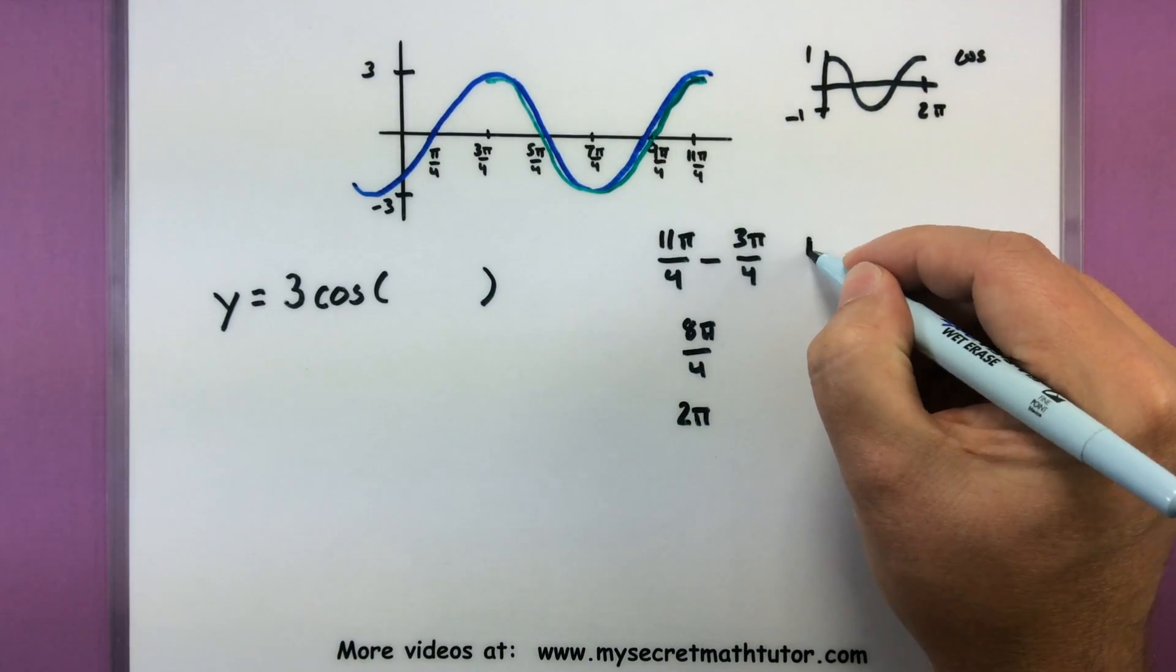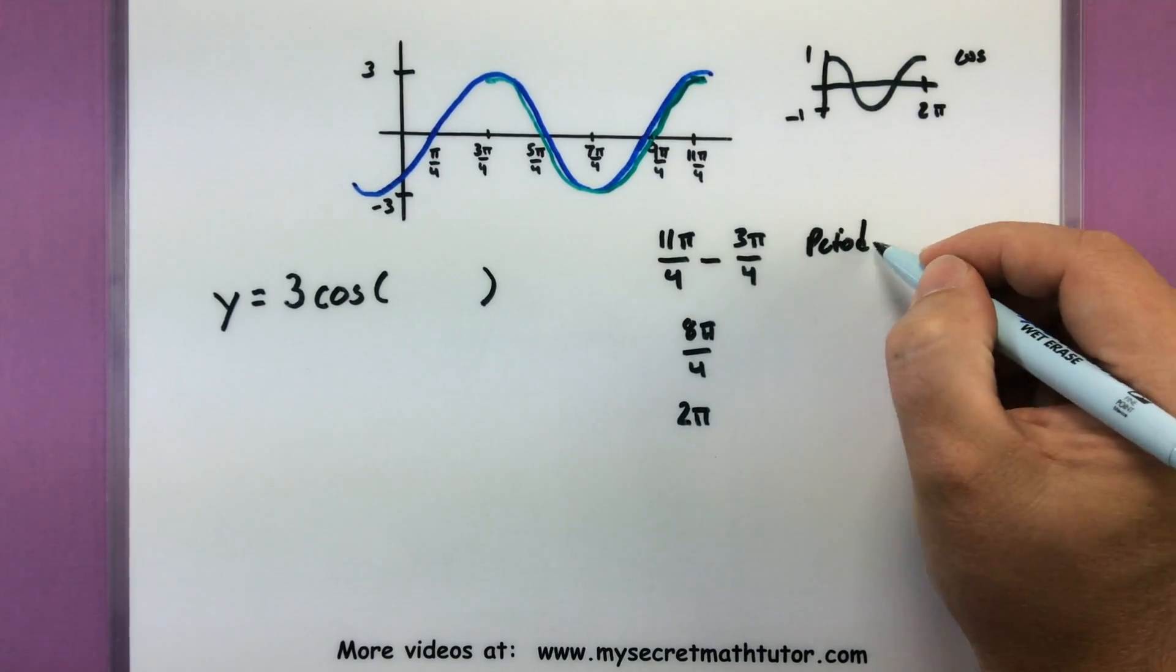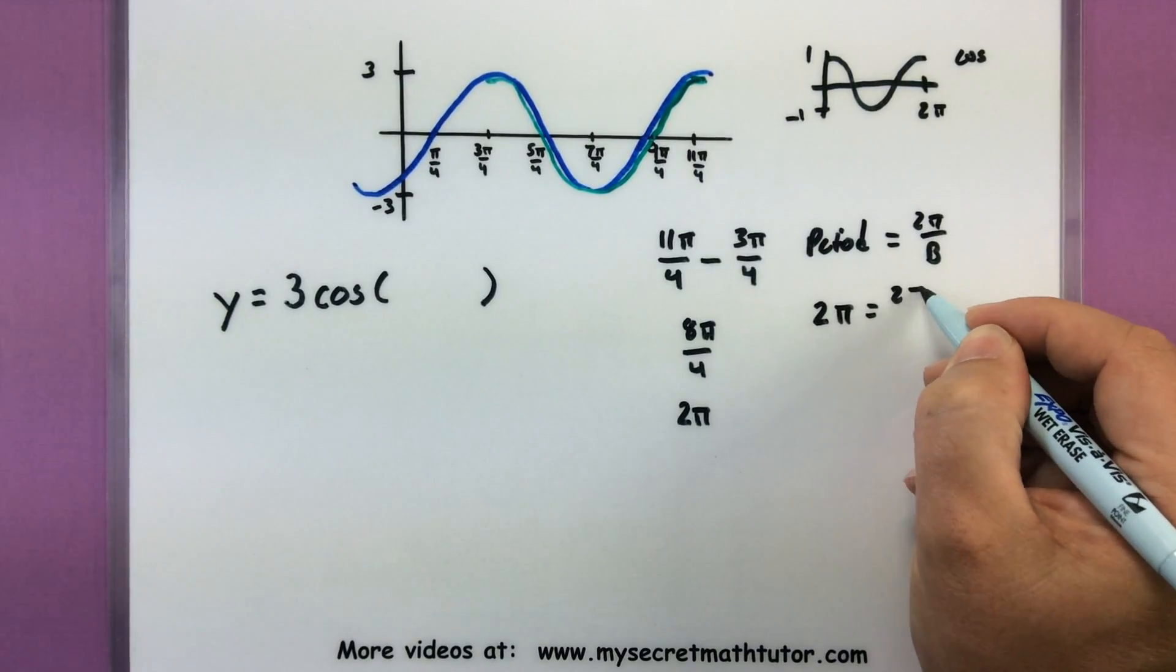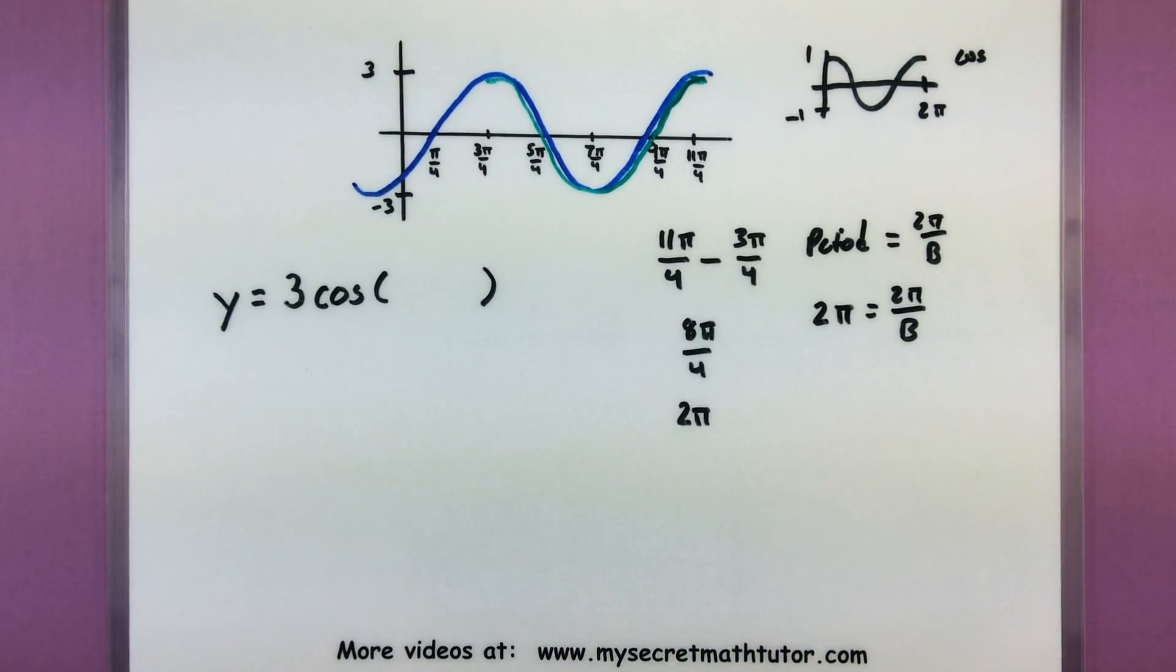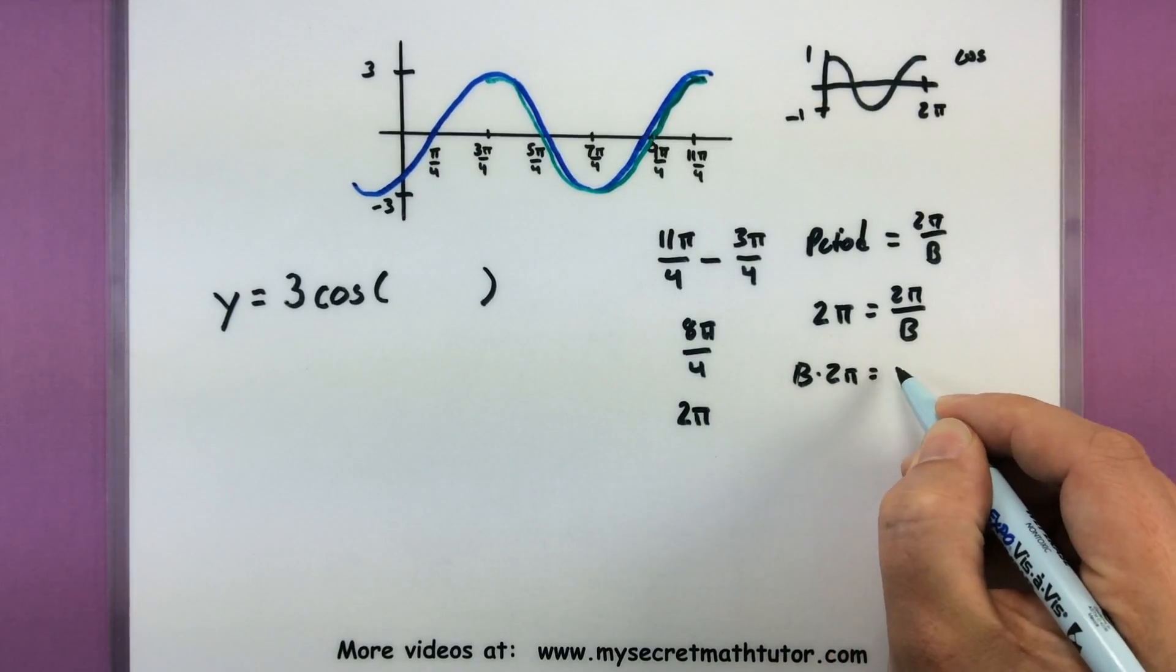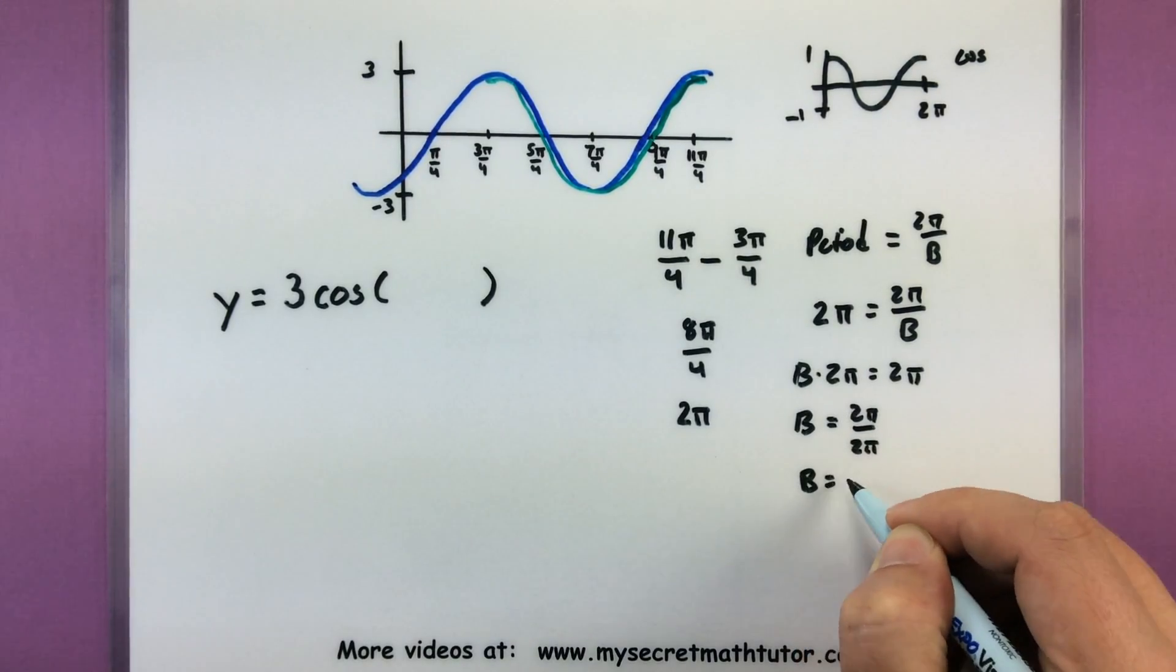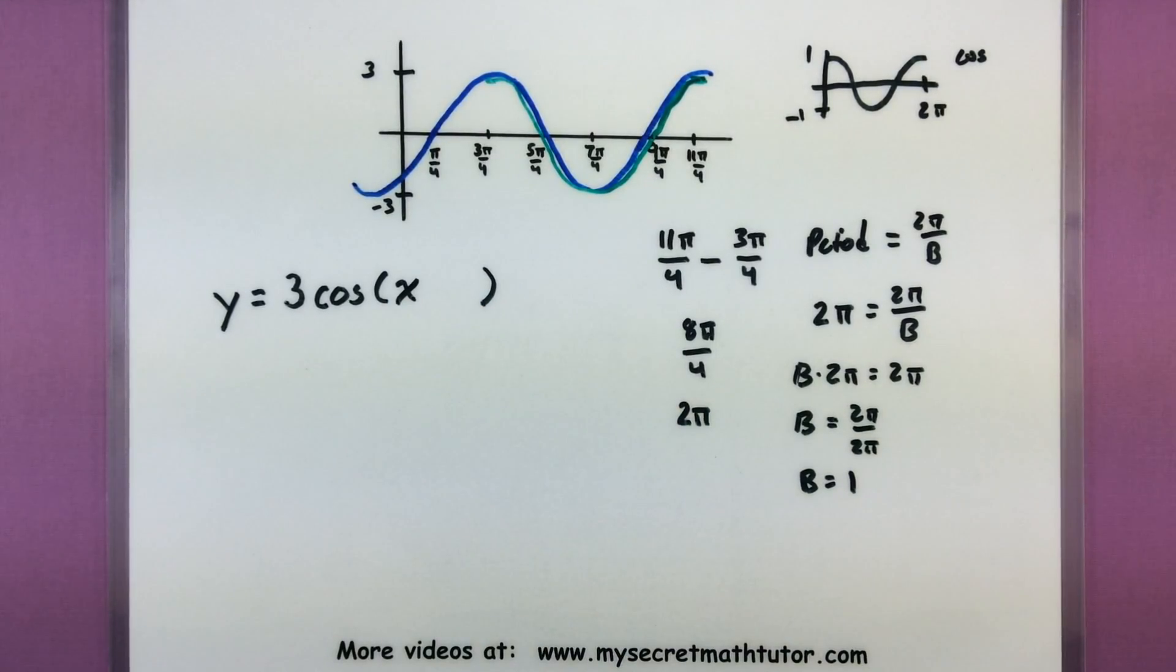So our period would equal 2 pi divided by B. So since our period is 2 pi, then I can solve this thing for B and use the B value in my equation. Let's see, so multiply both sides by B. Divide by 2 pi. And we can see that B is equal to 1. That means this is essentially just a 1 hanging out in front of my x.